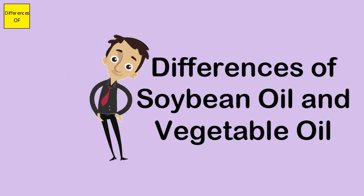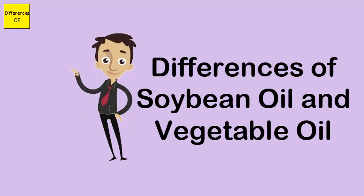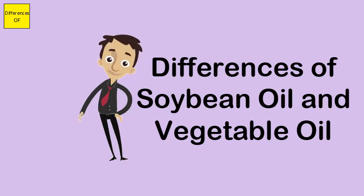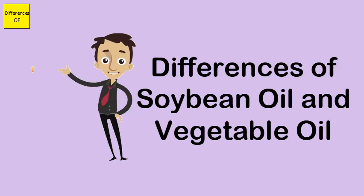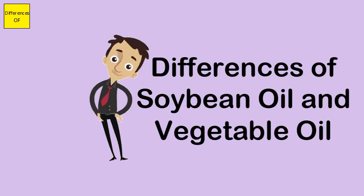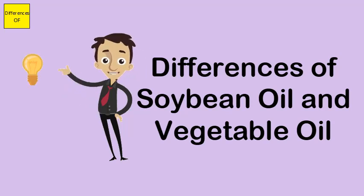The smoke points of vegetable oils vary and are higher for oils used for frying, such as canola oil at 242 degrees and safflower oil at 265 degrees. Soybean oil is rich in alpha-linolenic acid, while vegetable oil is rich in active fats called omega-6 polyunsaturated fatty acids.